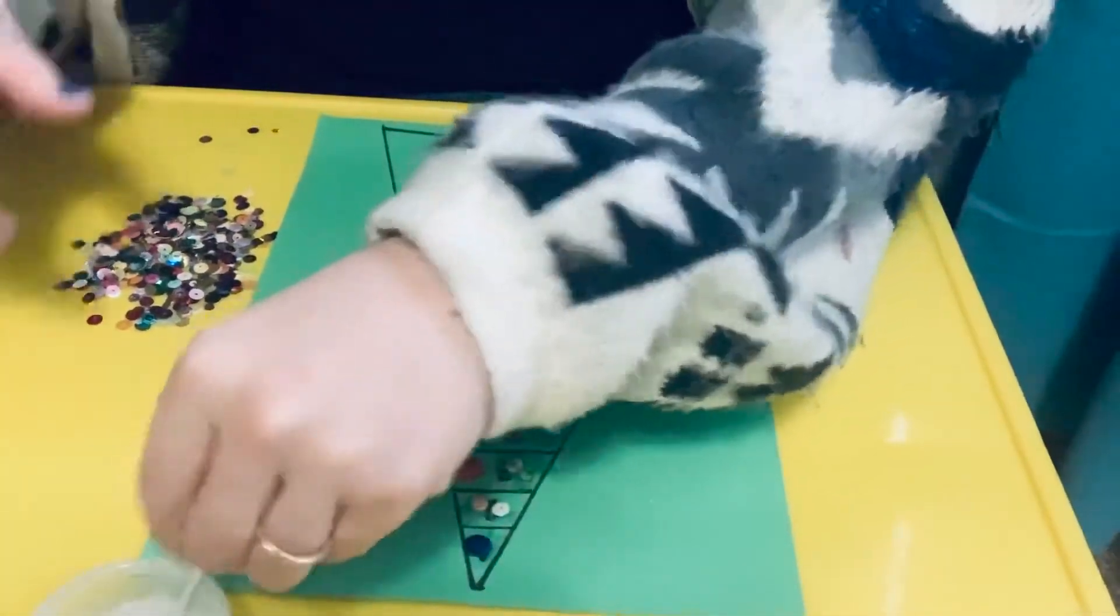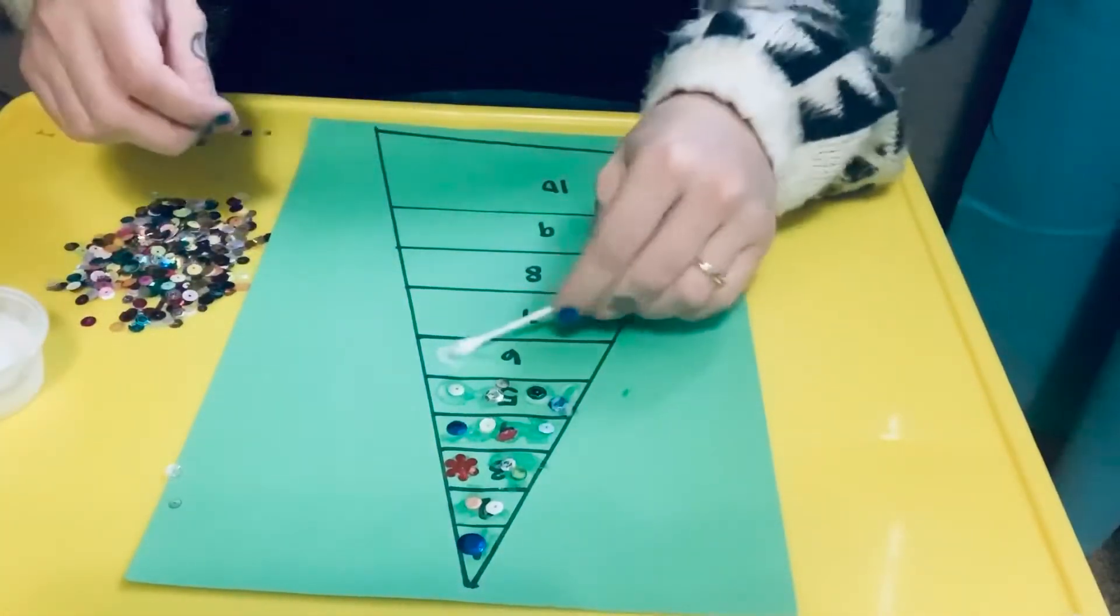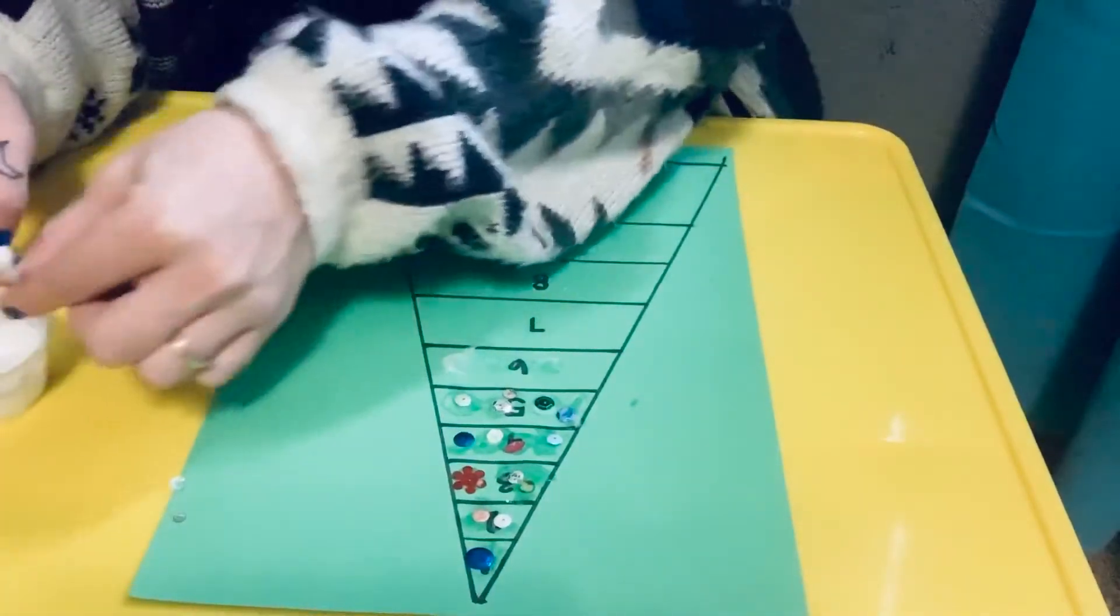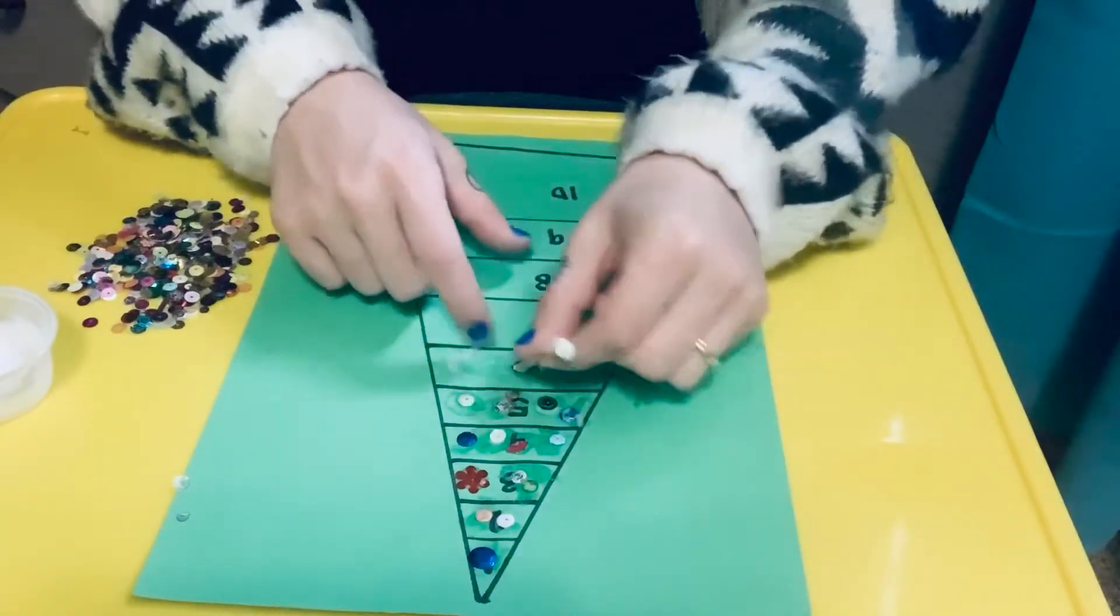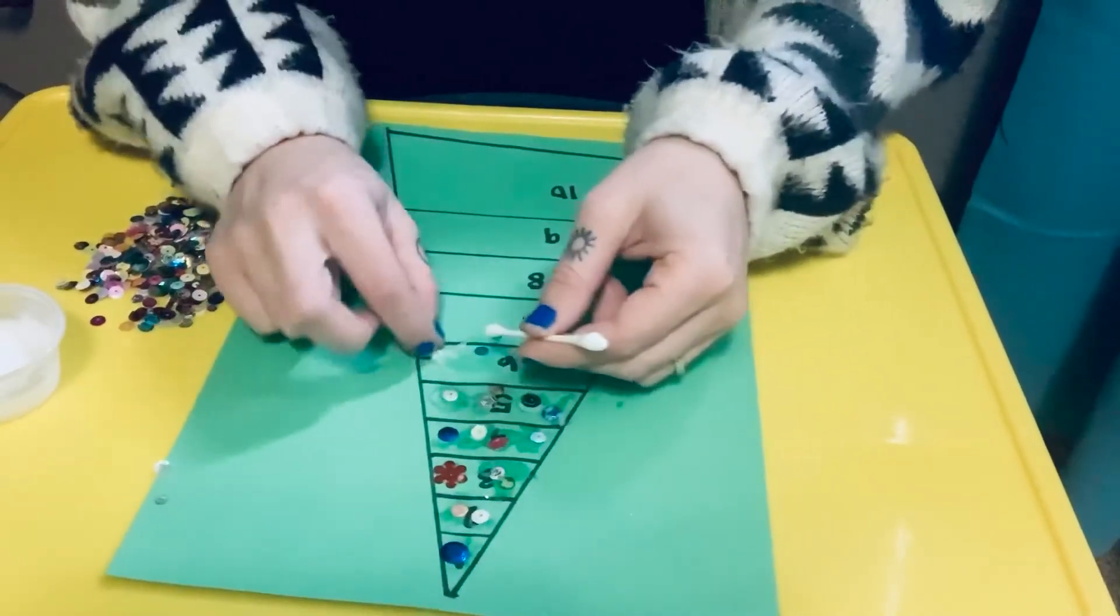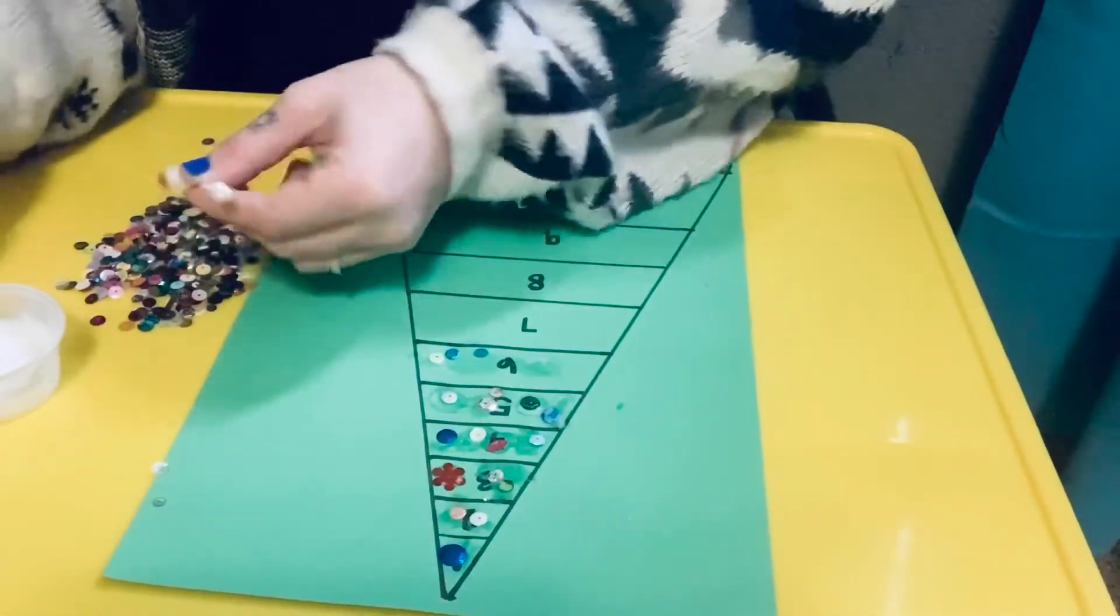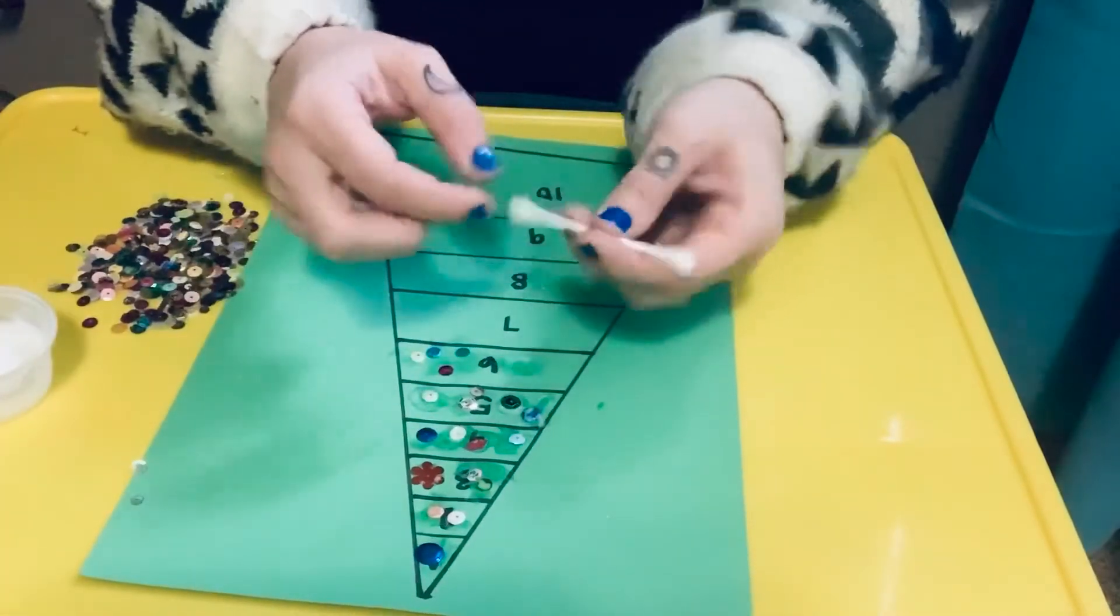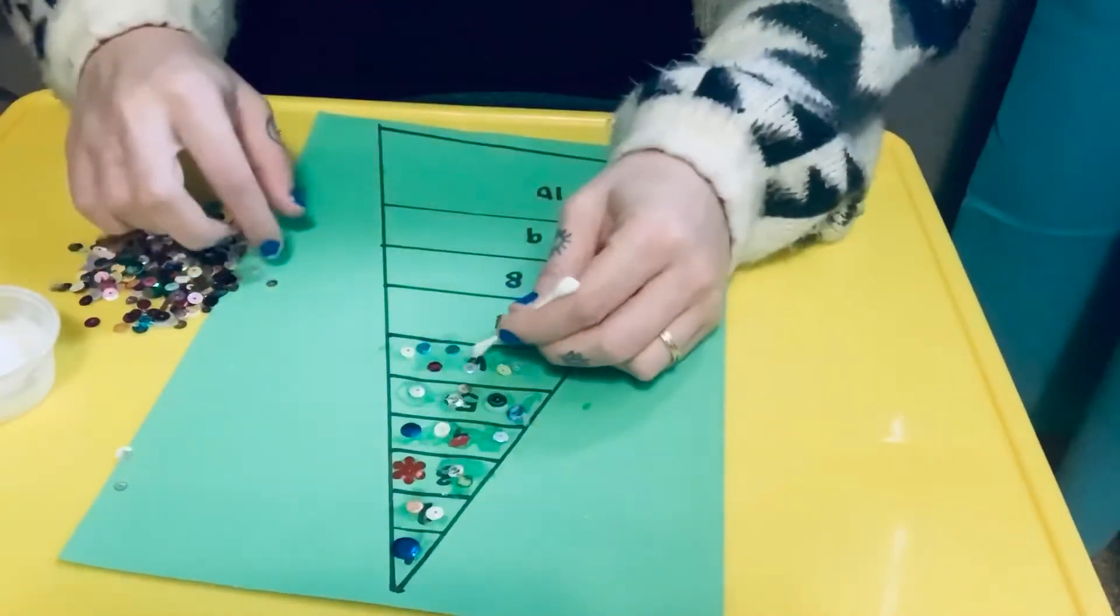And now Miss Tess is on number six. So I'm just gonna add a little bit of glue to my paper and then grab six sequins, five, six.